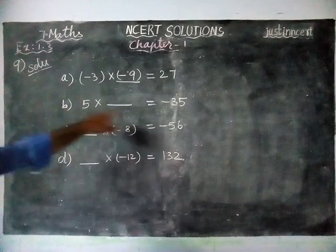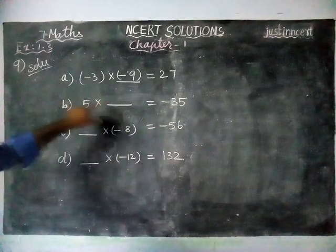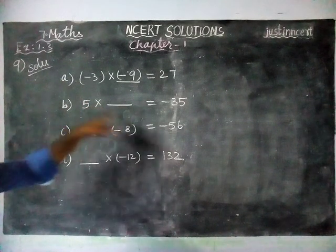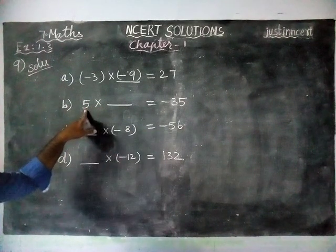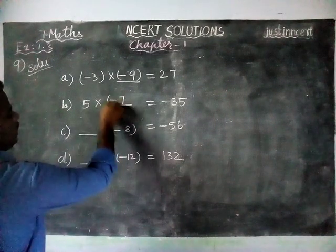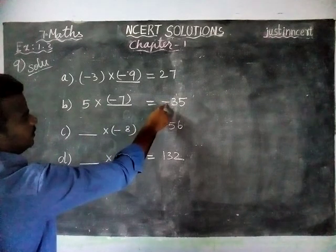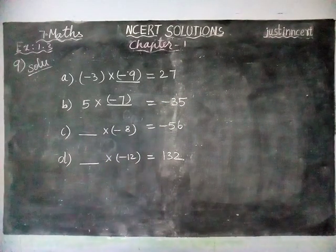Next, 5 × ___ = -35. We are getting minus 35 as answer, but here we have plus 5. So this number is definitely minus. When we are dividing 35 by 5, we are getting 7. So 7, and this is minus sign. 5 × 7 = 35. Plus into minus equals minus 35.